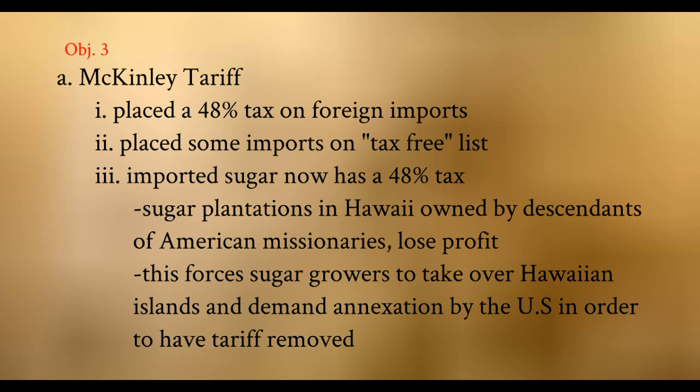Then the McKinley Tariff changed things. Pearl Harbor was now built, and Hawaii had no leverage. The McKinley Tariff placed a 48% tax on imports, including Hawaiian sugar. That's an insane amount of tax to sell sugar in the United States, and the sugar growers in Hawaii saw enormous loss of profit in their future. So they were forced to act — the only way to get rid of the tariff was to become a U.S. territory.